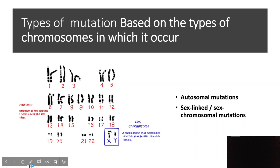We can also classify mutations based on which type of chromosome is affected. In humans, there are 23 pairs of chromosomes. These are divided into autosomal chromosomes and sex chromosomes.